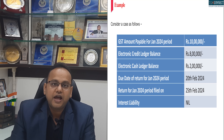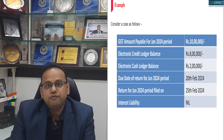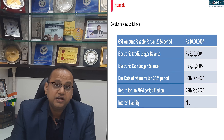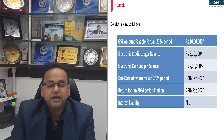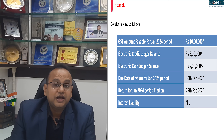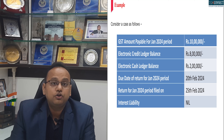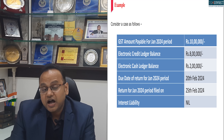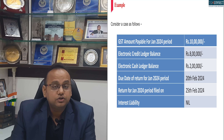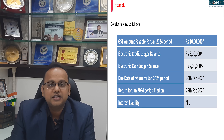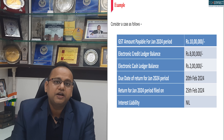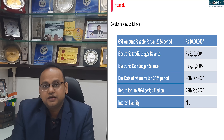Earlier, Section 50 was retrospectively amended to provide that even in such a case — say the GSTR 3B is filed delayed by 25th of February 2024 — no interest would be applicable to the extent of balance in the electronic credit ledger. The question is whether interest would be applicable when there is sufficient balance in the electronic cash ledger or not, as in this case.